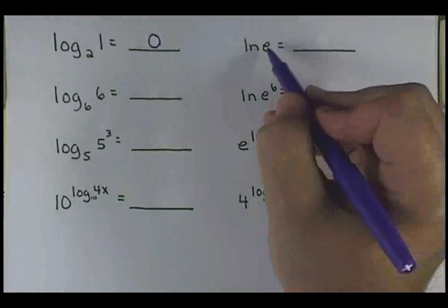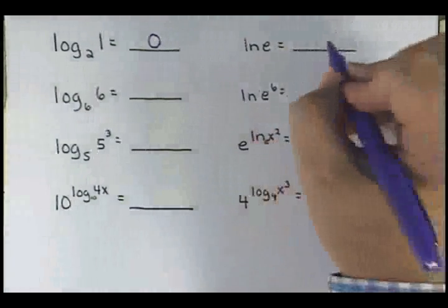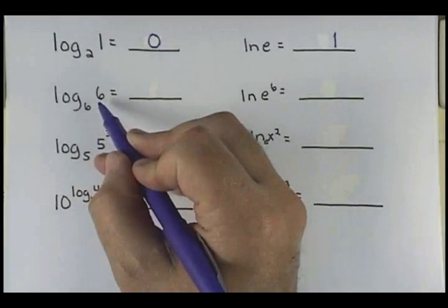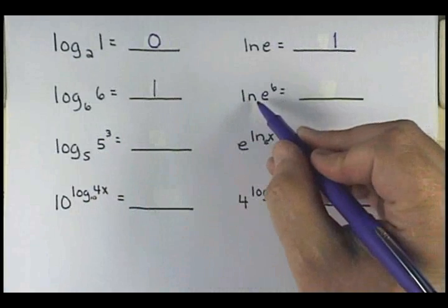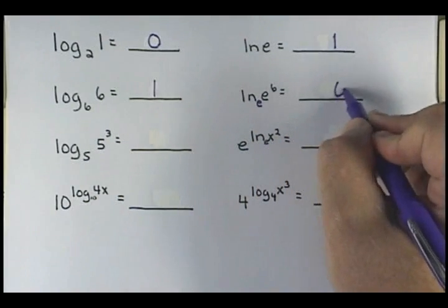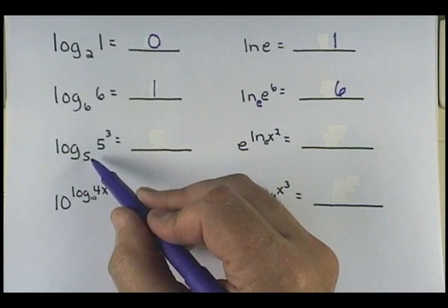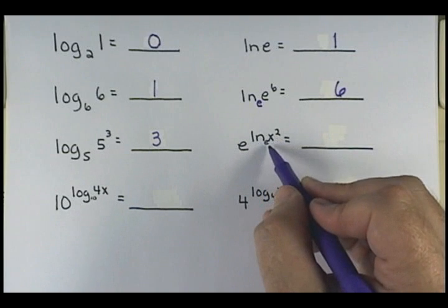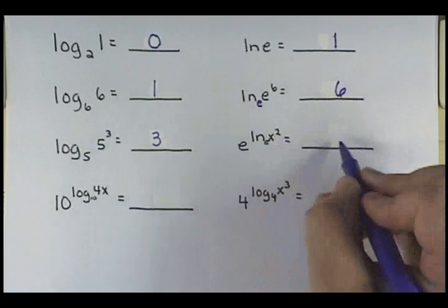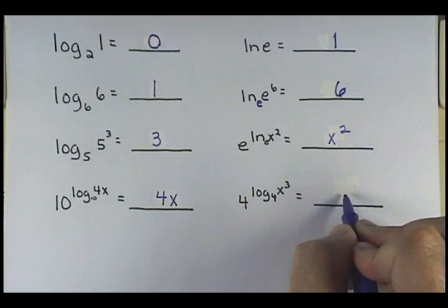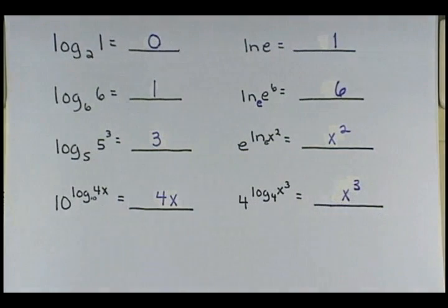The natural log of e to the base e — your bases are the same, so this equals 1. The next one: bases are the same, so it equals 1. The natural log of e to the 6th — your understood base is e, so this equals 6. Are my bases the same here — 5 and 5 — so this equals 3. This is your inverse: the natural log of x squared to the base e — you have base e, so this equals x squared. And 4x. Do you see your inverse properties?